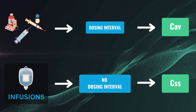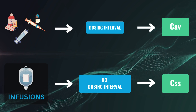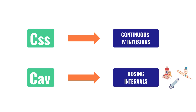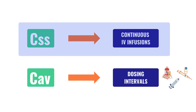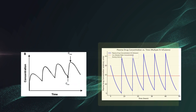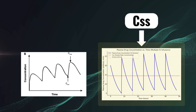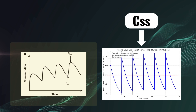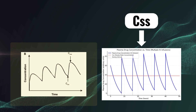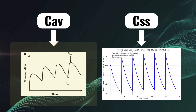But for drugs which have dosing intervals, like oral medications, instead of CSS we use CAV — called average steady-state concentration. In short, CSS is for continuous IV infusions, whereas CAV is for dosing intervals such as oral medications and injections. This graph shows an IV infusion graph — here continuity is present and we can use CSS. Now look at this graph of oral medication, which has a dosing interval. We can observe fluctuations like peaks and troughs. Hence, we cannot use CSS; we use CAV.